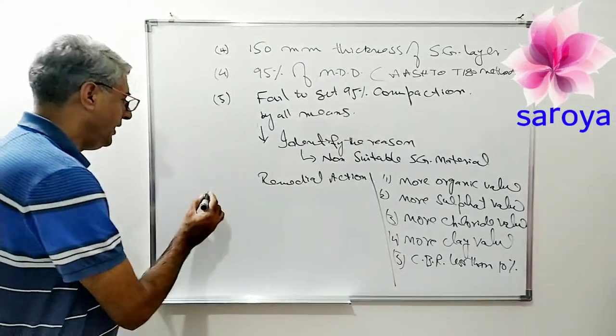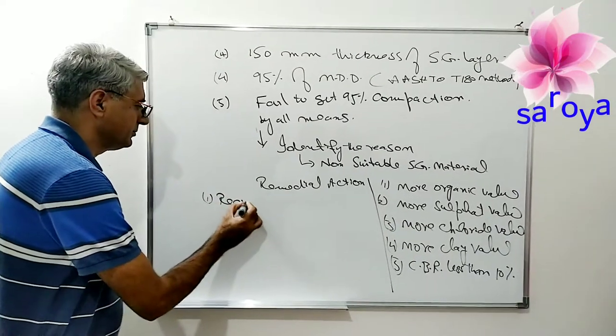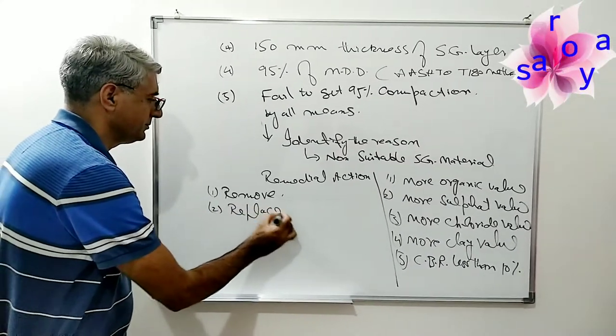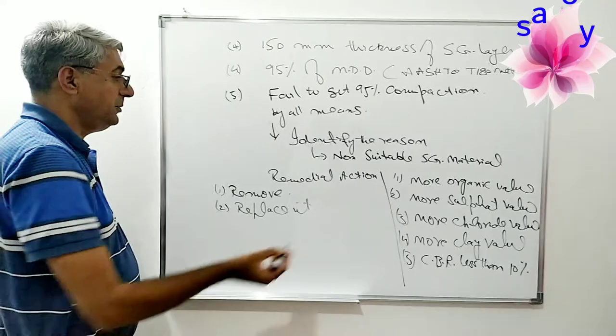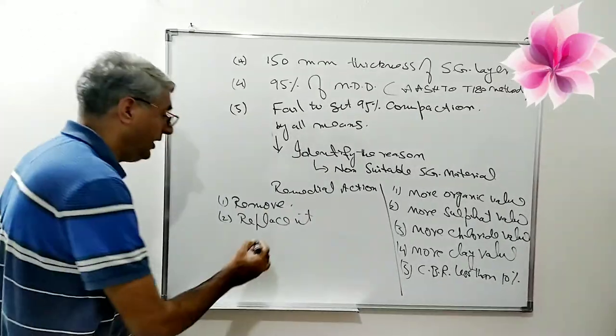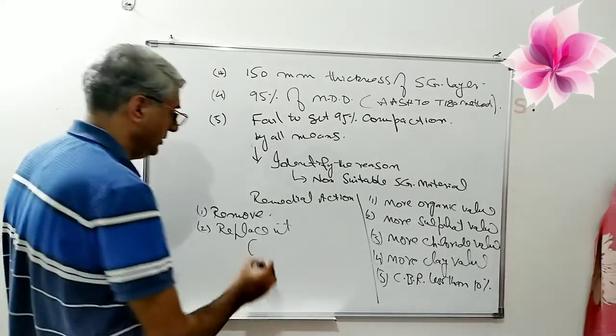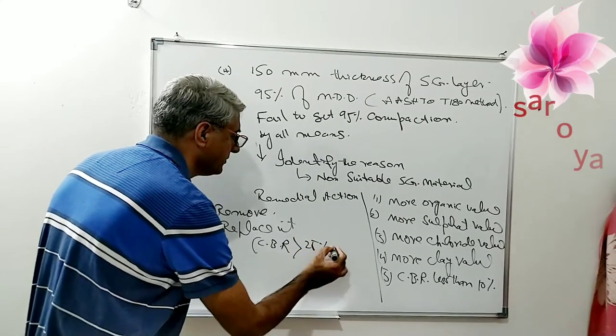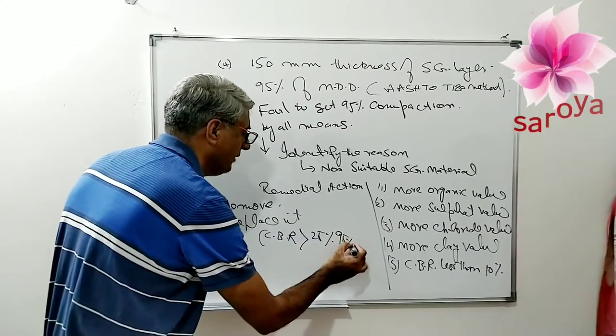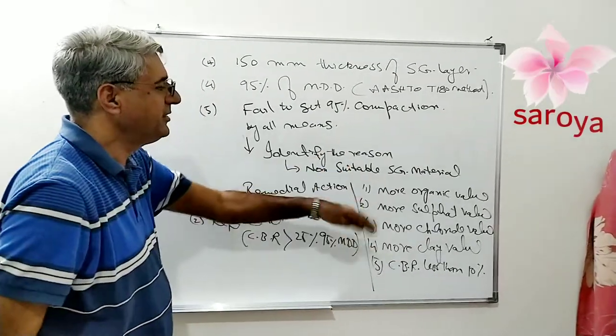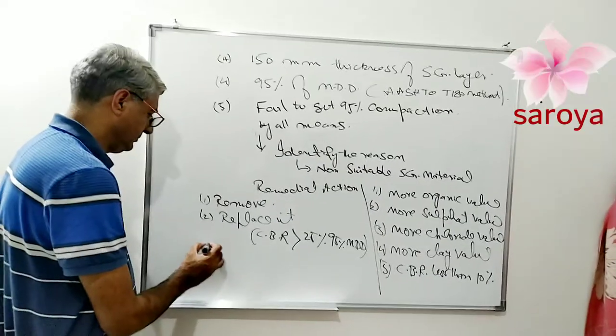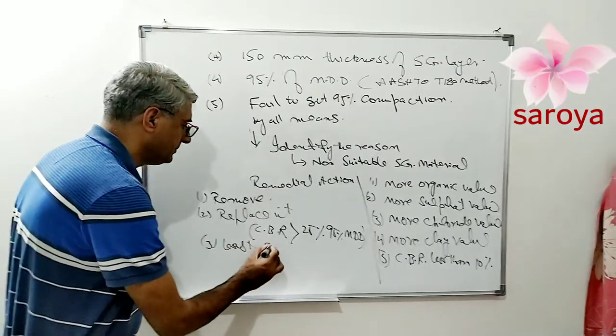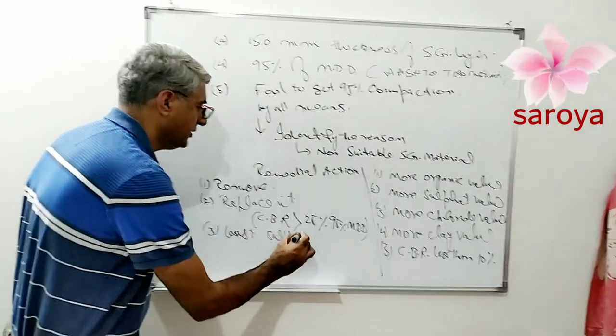When I have gone through this one, then I reach this material that is not suitable. Now I will go as remedial action: I will remove it, replace it with new material. I will replace it, I will bring some material from outside. I will check its CBR value should be greater than 25% at 95% of MDD, should be less in sulfate and chloride value.